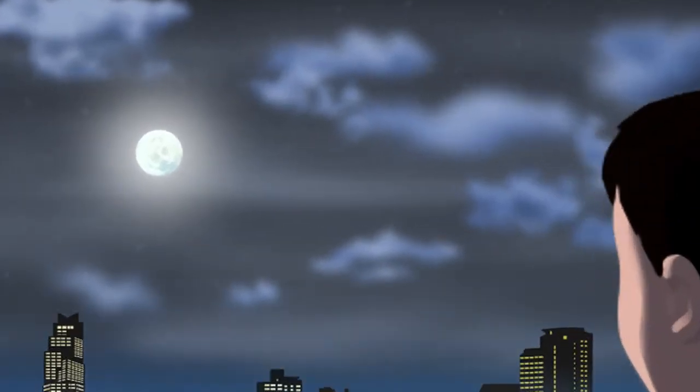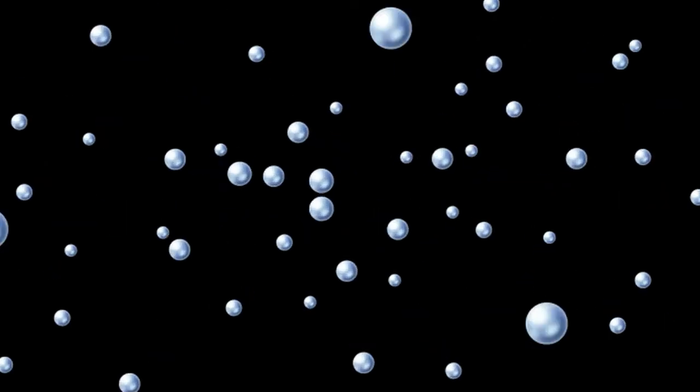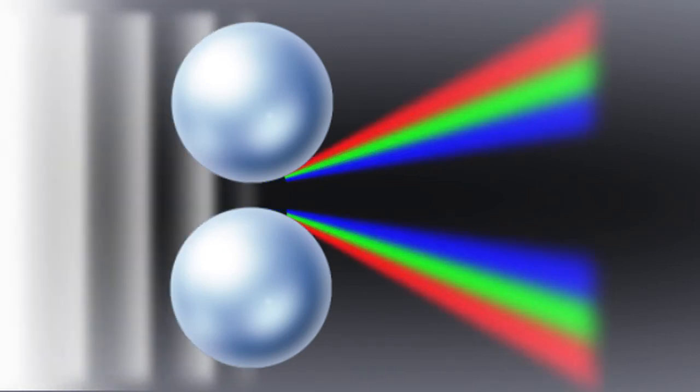There's also a reason why the blurry area is white. The color of light is determined by the wavelength. Because the angle of diffraction differs depending on the wavelength, the light is broken down into many colors.